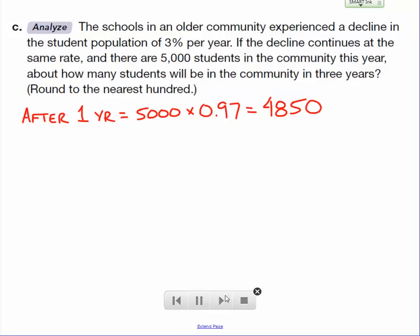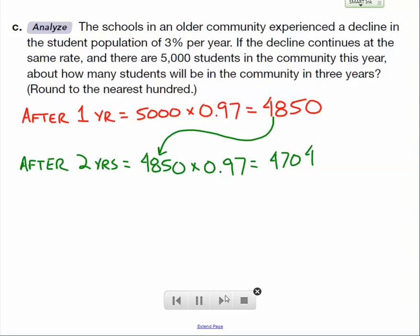What about after two years? Well, after two years, we'd have to take what was there the previous year, 4,850. And again, we're going to keep 97%. We're losing 3%, we're keeping 97%. That comes out to 4,704.5.